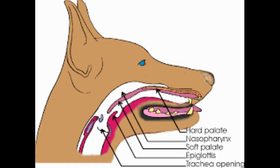In the voluntary phase of swallowing, food is moulded into a bolus by the tongue and this food bolus is pushed back into the pharynx. When the food enters the pharynx, sensory nerve endings detect its presence and initiate the involuntary portion of the swallow reflex.